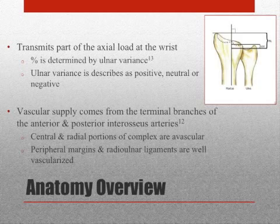Ulnar variance refers to the difference in length between the distal ends of the radius and the ulna functionally. Positive is when the ulna is longer than the radius, neutral is when they are even, and negative is when the ulna is shorter, which is the most common of the three.